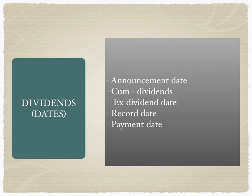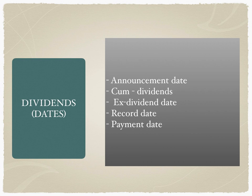The ex-dividend date is the date on which even if a shareholder buys the stock, they will not get the dividends. Cum dividend means it includes the dividends; ex-dividend means it excludes the dividends. There is a period — typically about 14 to 15 days, or a fortnight — between the announcement date and the ex-dividend date, during which investors can buy the stock knowing the stock price includes the dividend entitlement. The record date is the date on which if the shareholder's name appears in the books of records of the issuing company, they will be entitled to get the dividends.